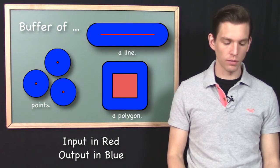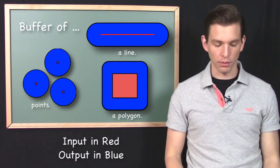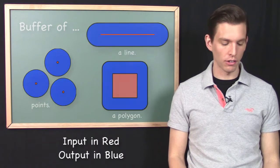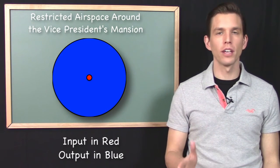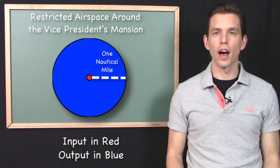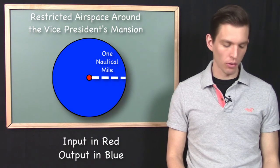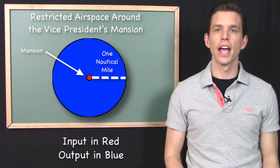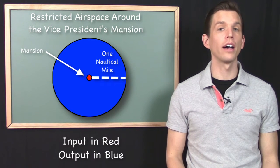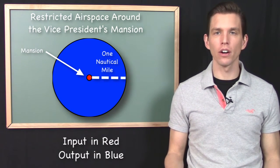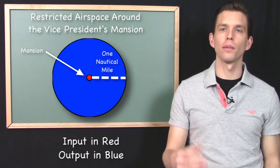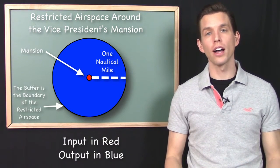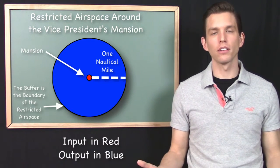So why would you use a buffer? In what situations would you need to compute this kind of geometry? Well, what if you were trying to establish the area that is a prohibited airspace around a particular location? What if there is prohibited airspace of one nautical mile all around the Vice President's mansion? If I give you this point vector file showing the location of the mansion, and I say restricted airspace extends within one nautical mile all the way around — I take the input point, buffer it with a distance of one nautical mile, and the output returns to me all of that restricted airspace.